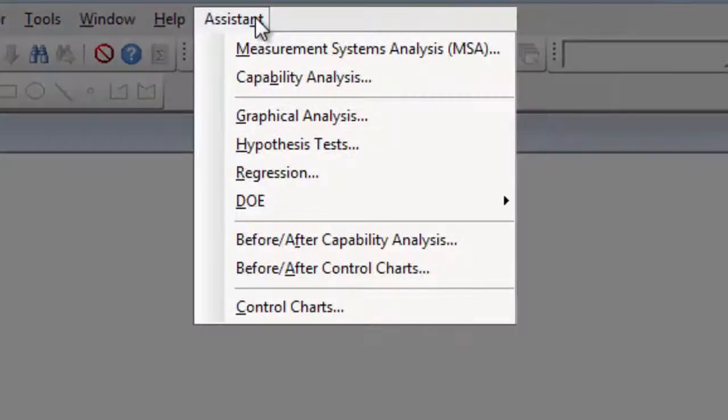The Assistant in Minitab Statistical Software is an interactive menu that guides you through an analysis from start to finish. Let's use it to see if the data confirm or refute Joel's belief.